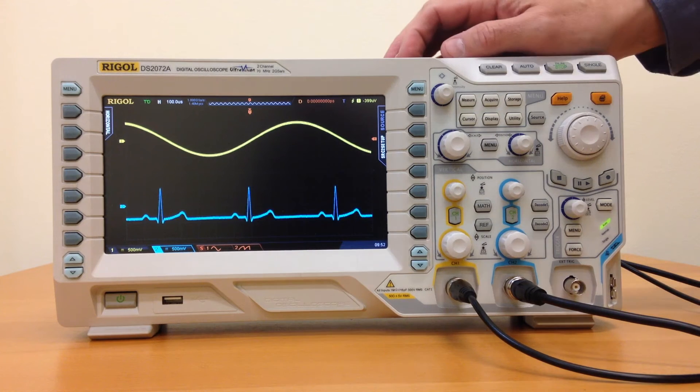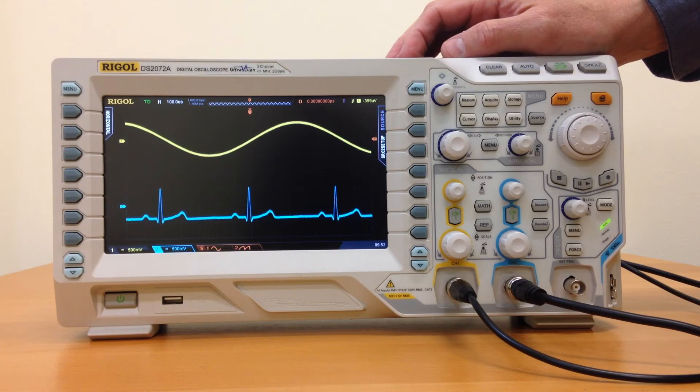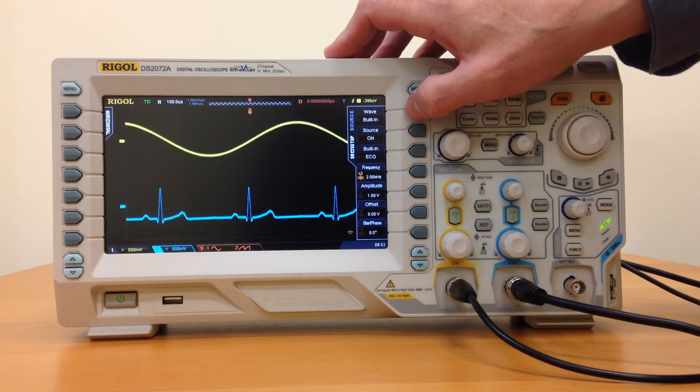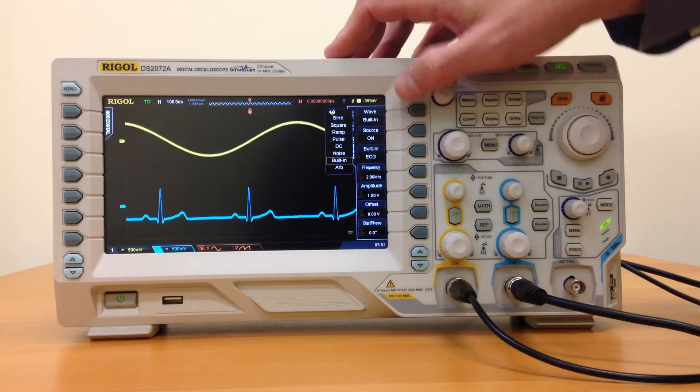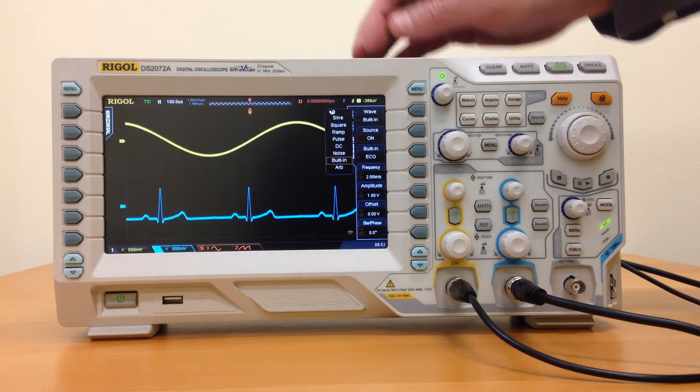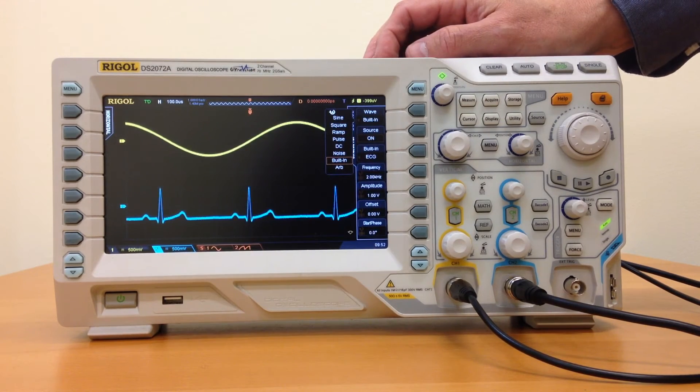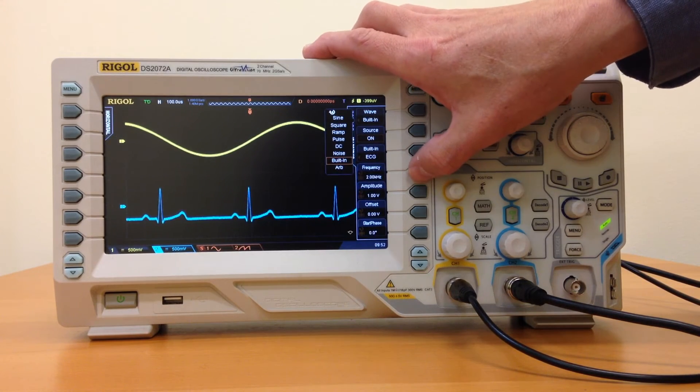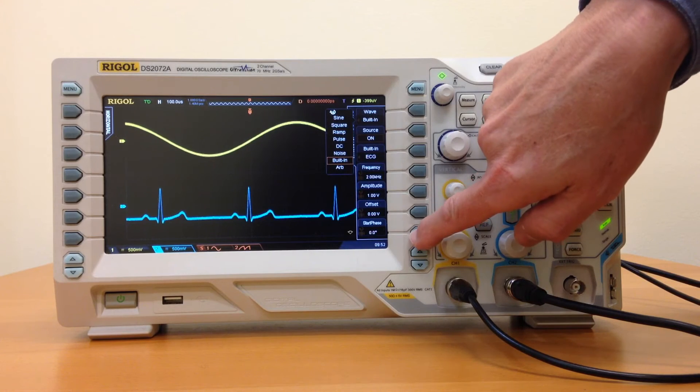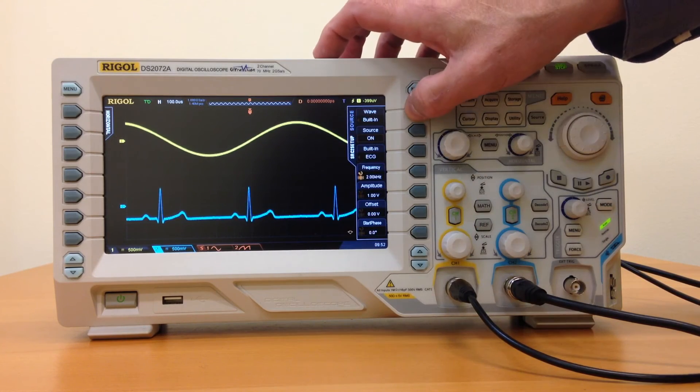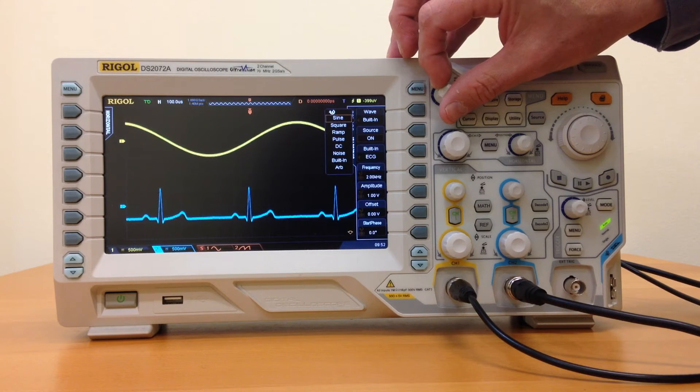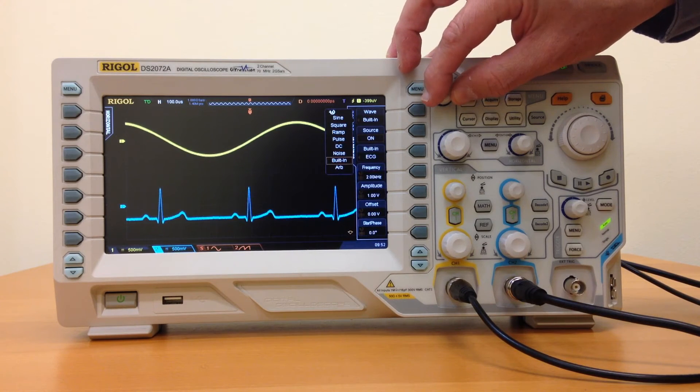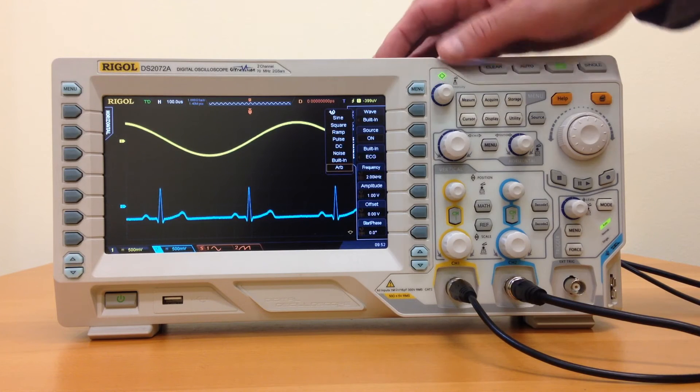The S version of the 2008 series features a two-channel function generator. The two-channel function generator is a function arbitrary generator which has a variety of standardized waveforms, as well as user-created arbitrary waveforms. The waveforms have independent control over frequency, amplitude, and also phase. We can see the variety of different waveforms with some modulation as well, and then we have arbitrary capability with user-created waveforms.